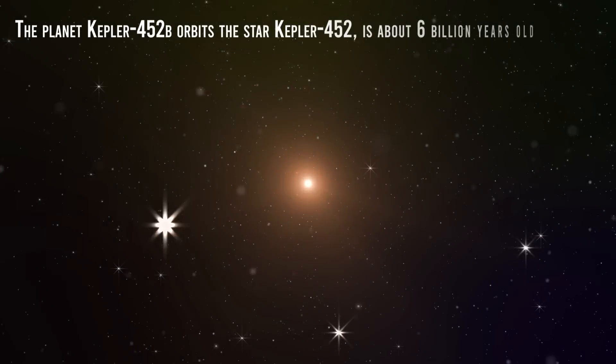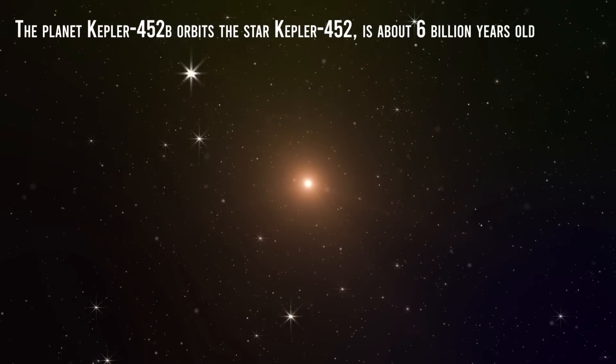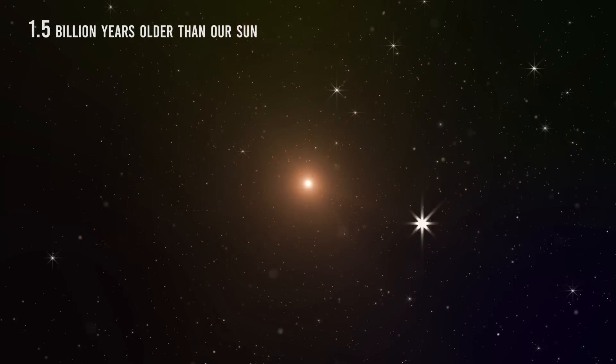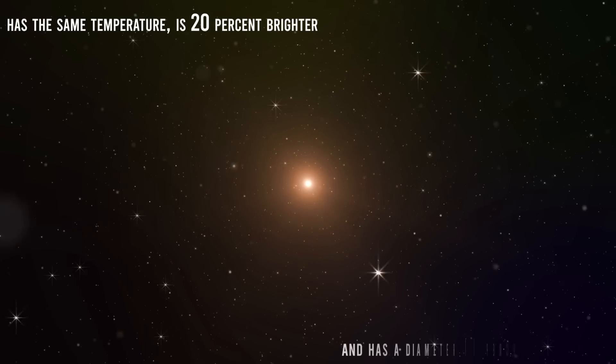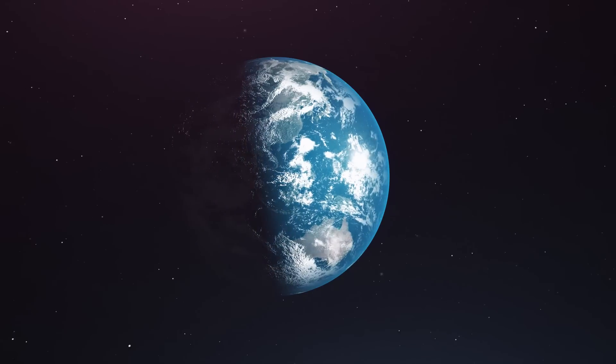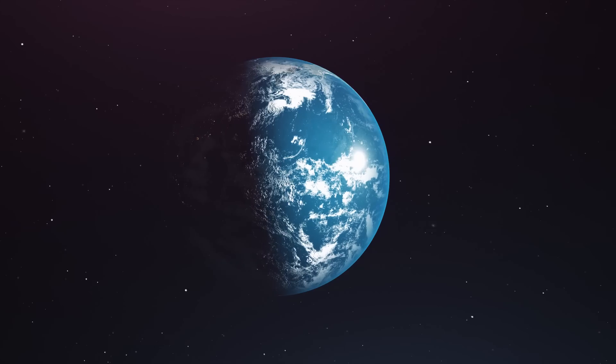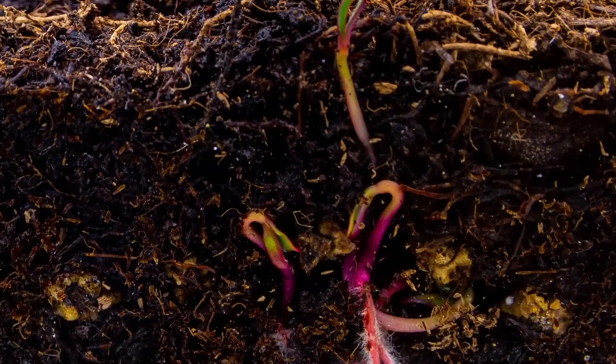The planet Kepler-452b orbits a star that is about 6 billion years old, 1.5 billion years older than our Sun, has the same temperature and is about 20% brighter, and has a diameter 10% larger. We can think of Kepler-452b as an older and larger cousin of Earth, providing an opportunity to understand and reflect on Earth's evolving environment.